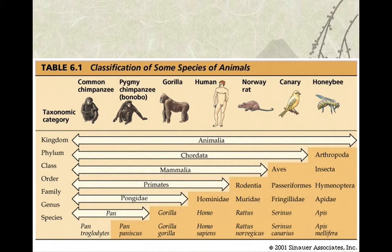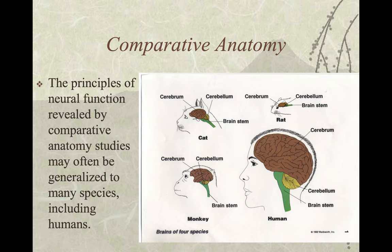This is the classification of bees, canaries, Norway rats, the common chimpanzee, the bonobo, the human, and the gorilla. Principles of neural function revealed by comparative anatomy studies may often be generalized to many species, including humans. The major divisions of the brain are shared by all vertebrates, and brain differences between species can often be directly related to their ecology and behavioral complexity.